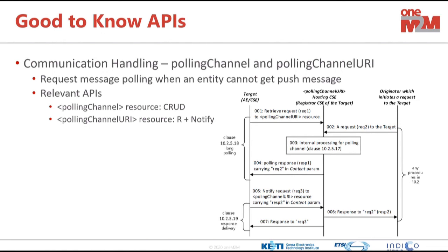Another approach to solve the NAT or firewall problem is MQTT. oneM2M provides MQTT protocol binding. With an MQTT broker, all clients communicate through the broker, so the hosting CSE can send requests to the target via the MQTT broker and receive back through it — no direct connectivity issues. This is normally the case used in projects and deployments.